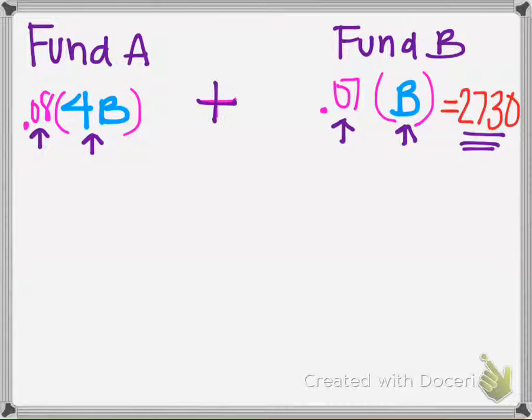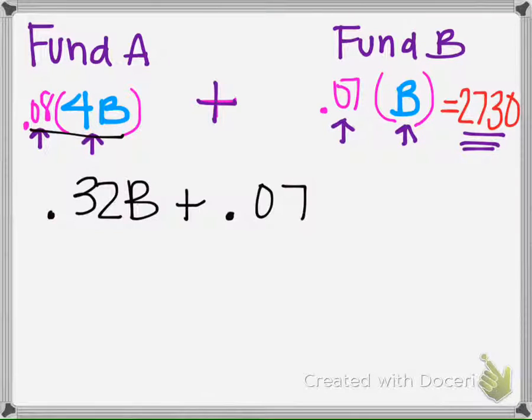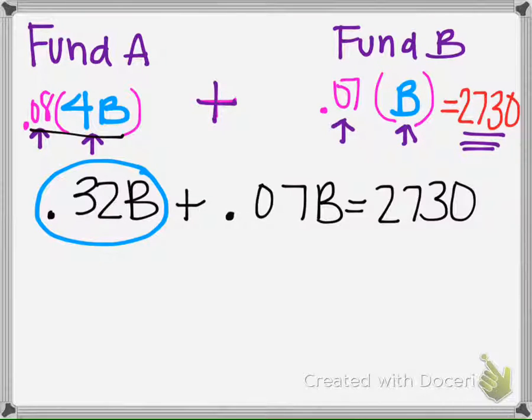Now we're going to simplify. First, 0.08 times 4 is 0.32B, and then 0.07B here. Next, we combine the like terms because they both have B's, so that makes 0.39B.